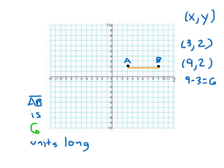Remember, you can't count the starting point as 1 — you have to go 1 away, then count 1, 2, 3, 4, 5, and 6 units long. That is a common mistake. In this case, this is a horizontal line segment because it goes from left to right.